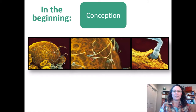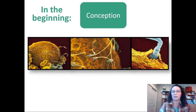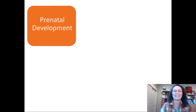So in the beginning — conception. What you're seeing in these images: on the left, you can see the egg, the big globe, being swarmed by sperm trying to penetrate its membrane. Each sperm is attempting to be the first one through. On the right-hand picture, you see the winner — that sperm and its 23 individual chromosomes will pair up with the egg's 23 individual chromosomes to create 23 pairs, giving us the blueprint for the new blastocyst.